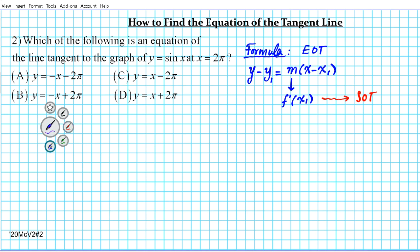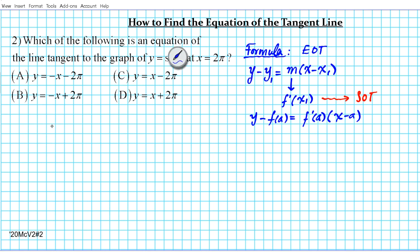Another variation of this exact same equation using a and f of a notation is y minus f of a equals f prime of a times x minus a. In many calculus textbooks, this format is utilized. I like the one on top because it's familiar and easier to remember. So let's go ahead and get started — let's write down all the things we need to write down the equation of the line and then put it into the formula.